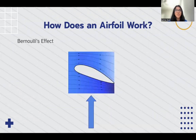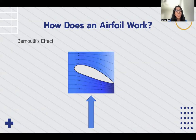So how does an airfoil work? Well, in this diagram you can see the cross-section of a wing, or the airfoil, that is moving through the air. You can see that below the wing there is a higher pressure and a lot more air, and above the wing there's a lower pressure.